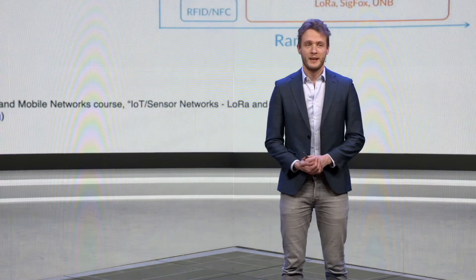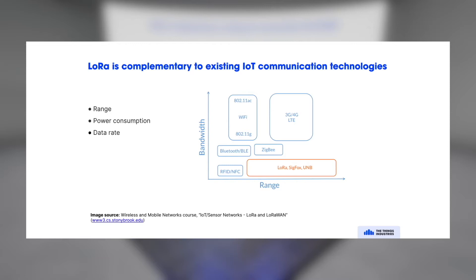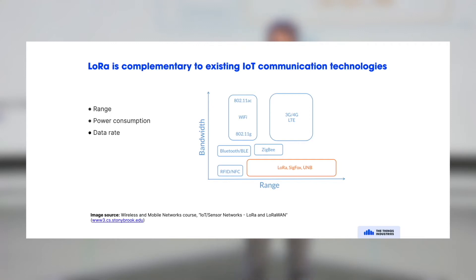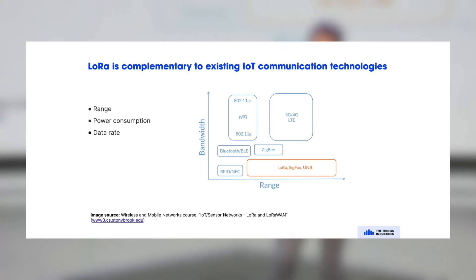LoRa is really complementary to existing IoT communication technologies. LoRa is unique in that it's long range, but obviously at the cost of bandwidth. It's designed for IoT use cases which require only very little bandwidth and very small messages, but that also makes it really useful for devices that are usually asleep. There is very little overhead to have the device on the network, so it can basically be in deep sleep most of the time. When a message needs to be sent, it just wakes up, sends the message, and goes back to sleep.